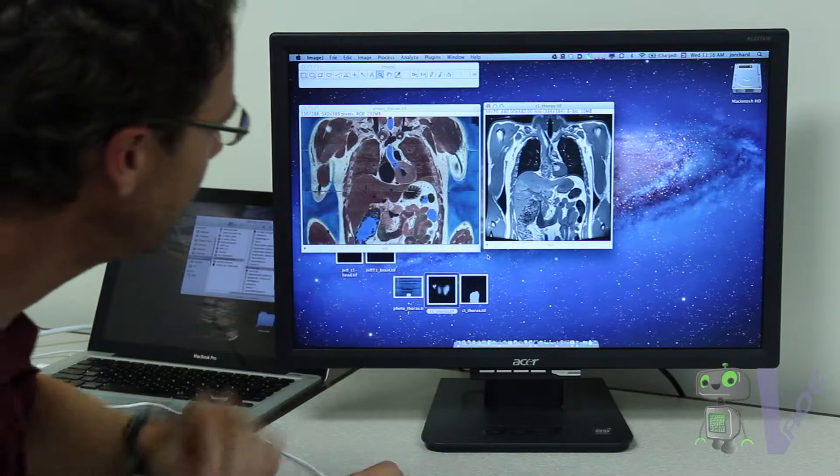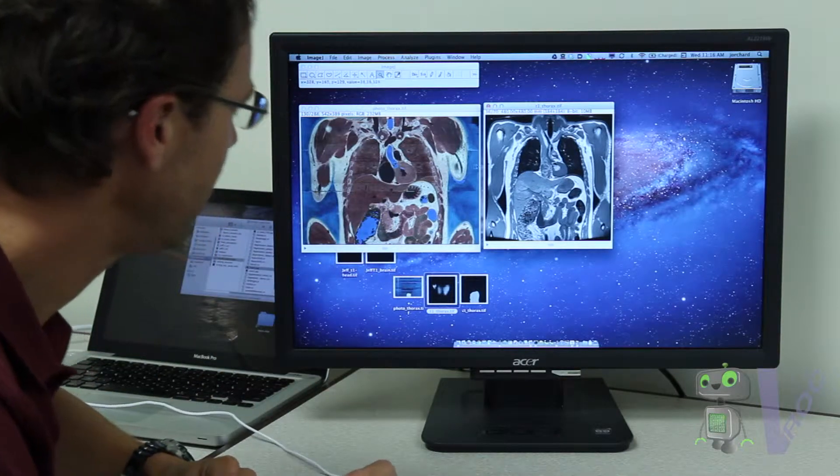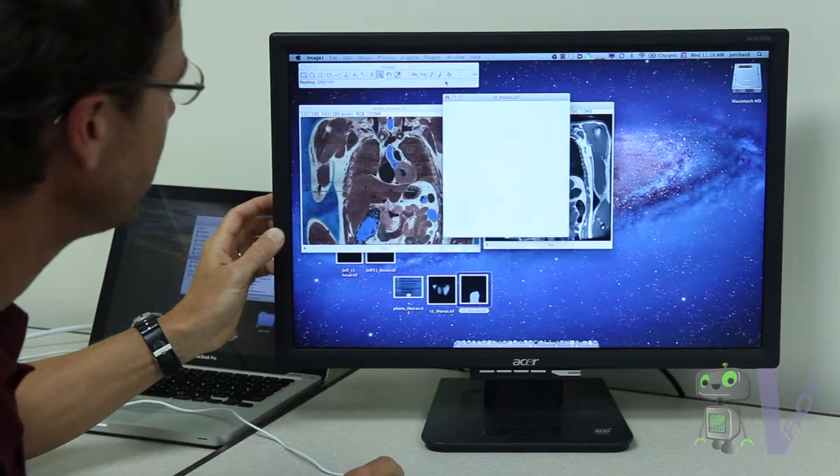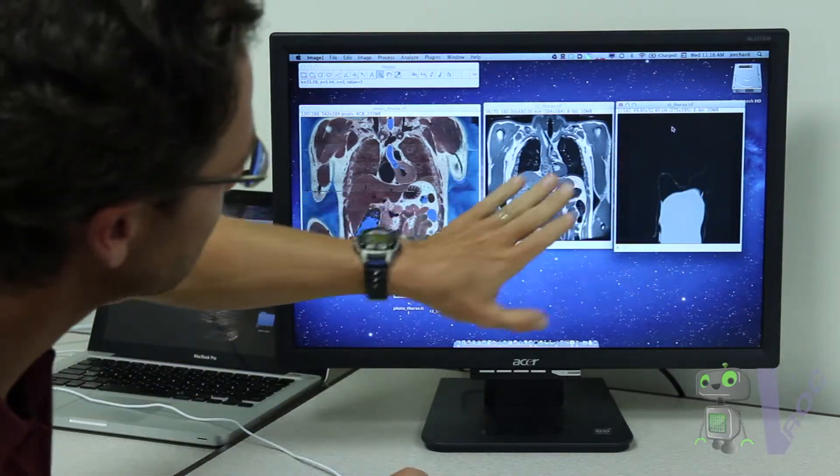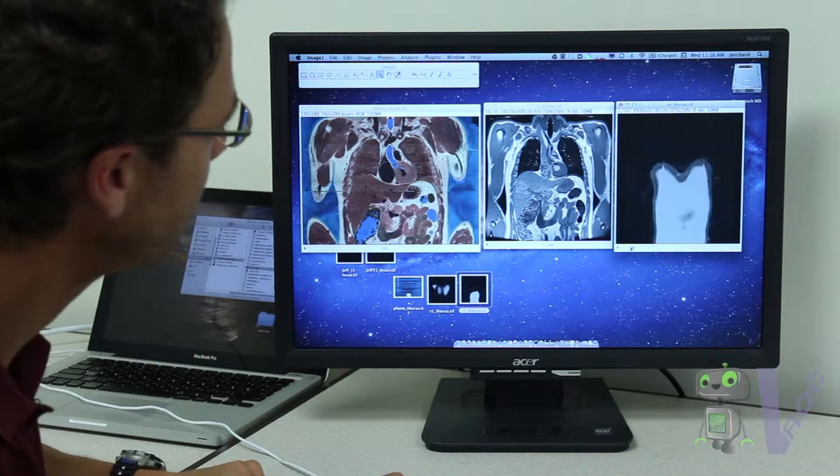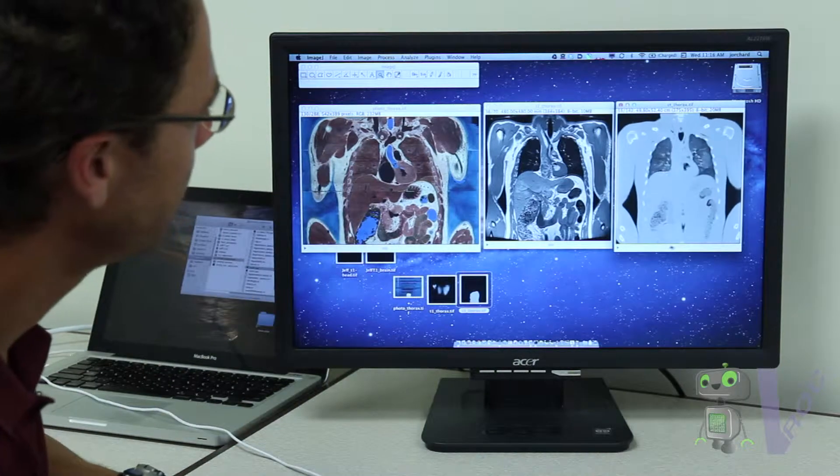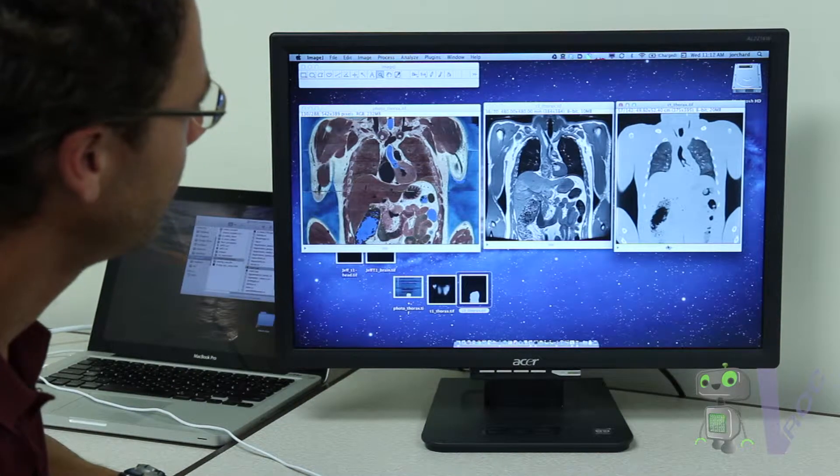You can see that they look similar. We also have a CT scan, or CAT scan. Normally a radiologist would have these two things and try to find disease.